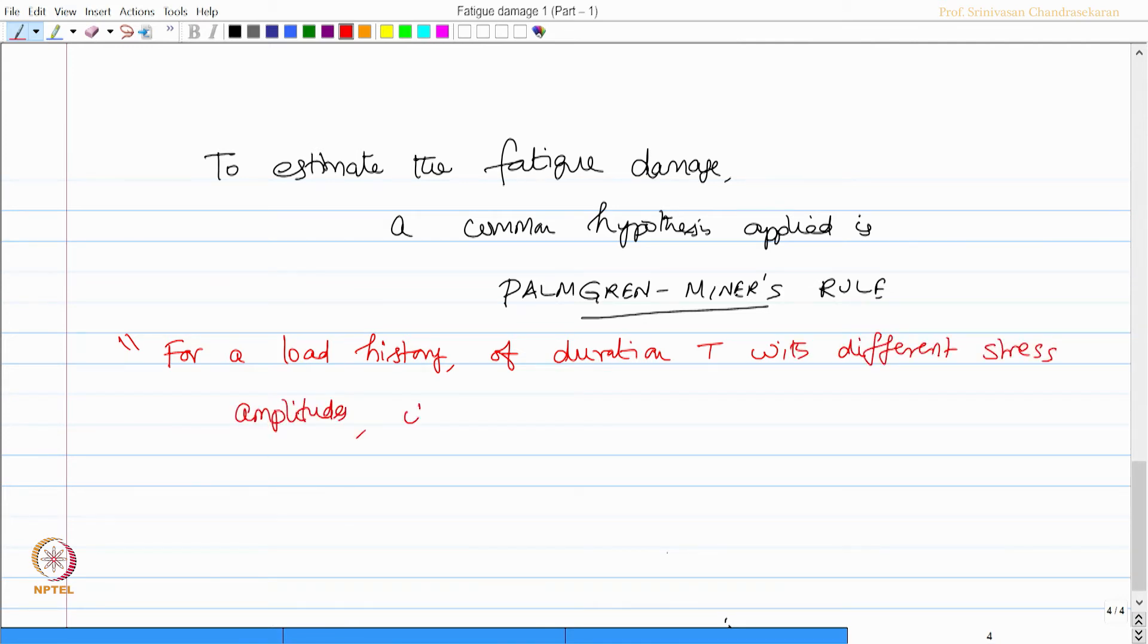This rule states that for a load history of duration T with different stress amplitudes, it is assumed that the accumulated damage is given by equation d(T), which is summation of N_j to capital N_j, where j is summation equation 2, where N_j is number of cycles in the time history associated with the stress range S_j.